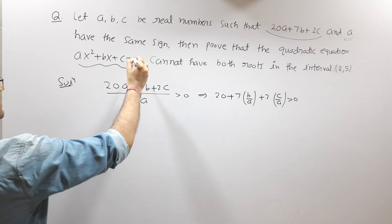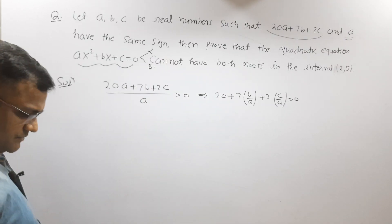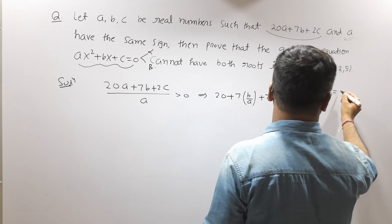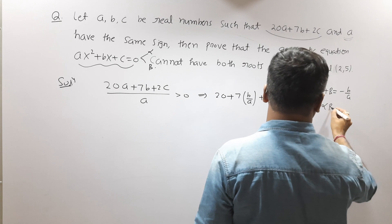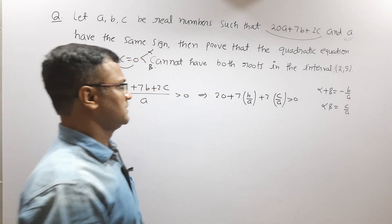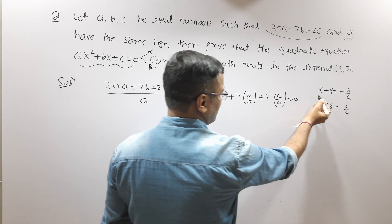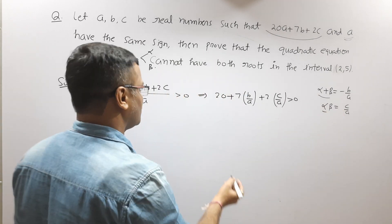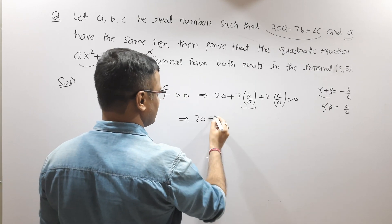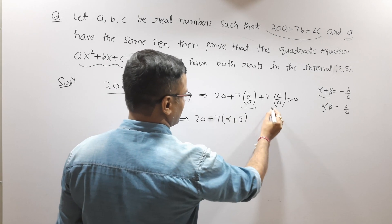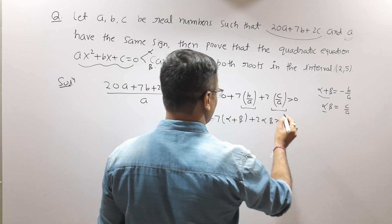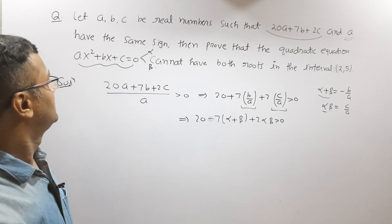Now suppose this quadratic has two roots α and β. Then by Vieta's formulas, the sum of roots is −b/a, and the product of roots is c/a. So we substitute: 20 + 7·(−(α+β)) + 2·(αβ) > 0, introducing α and β into our inequality.